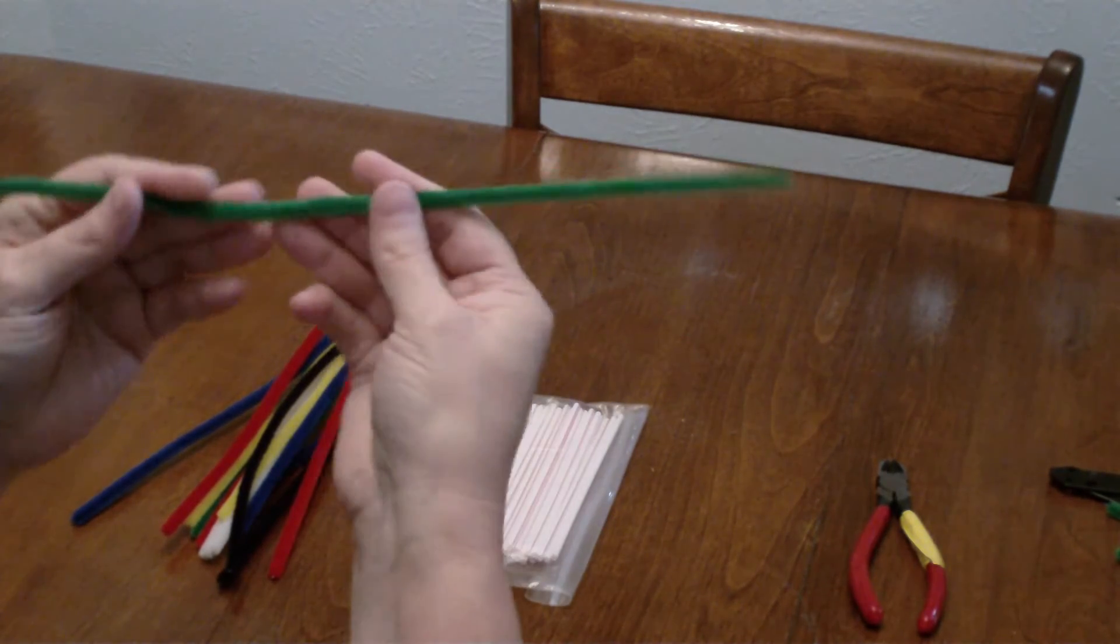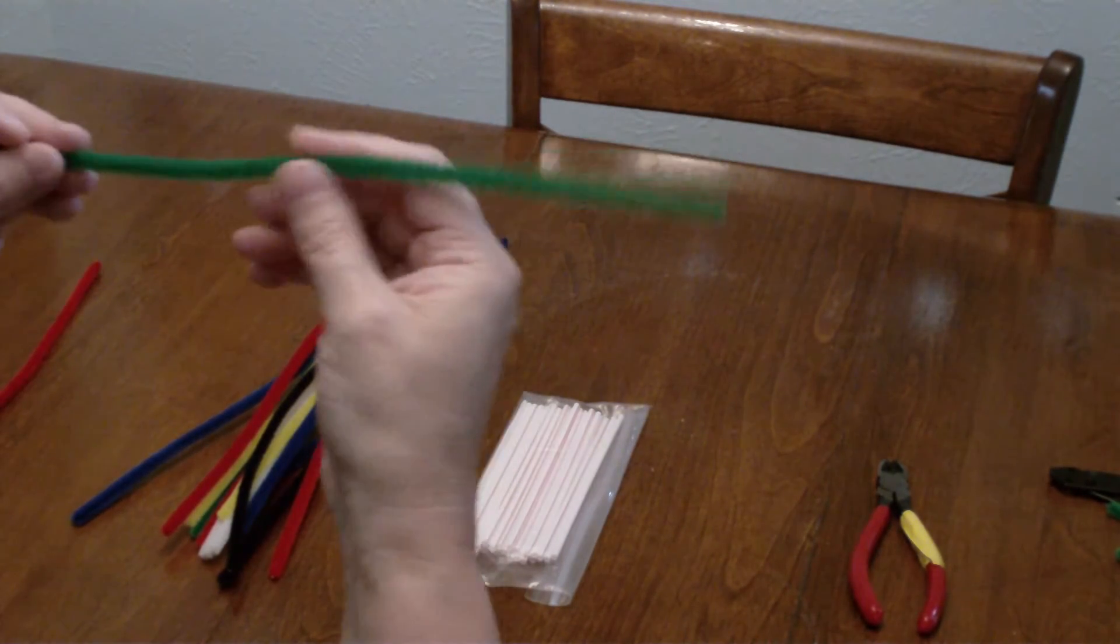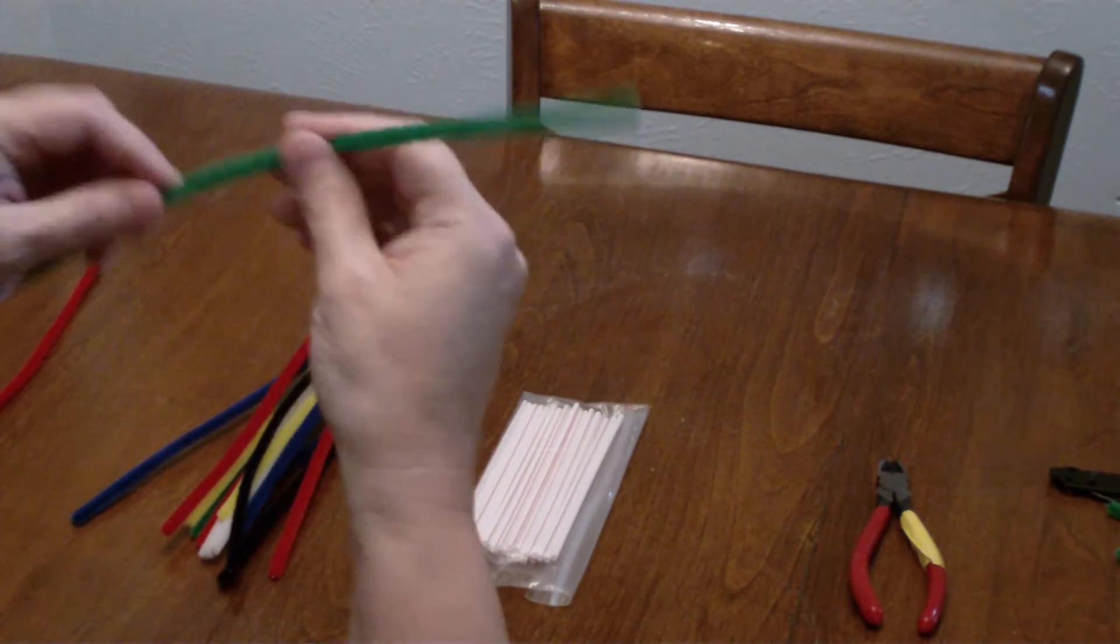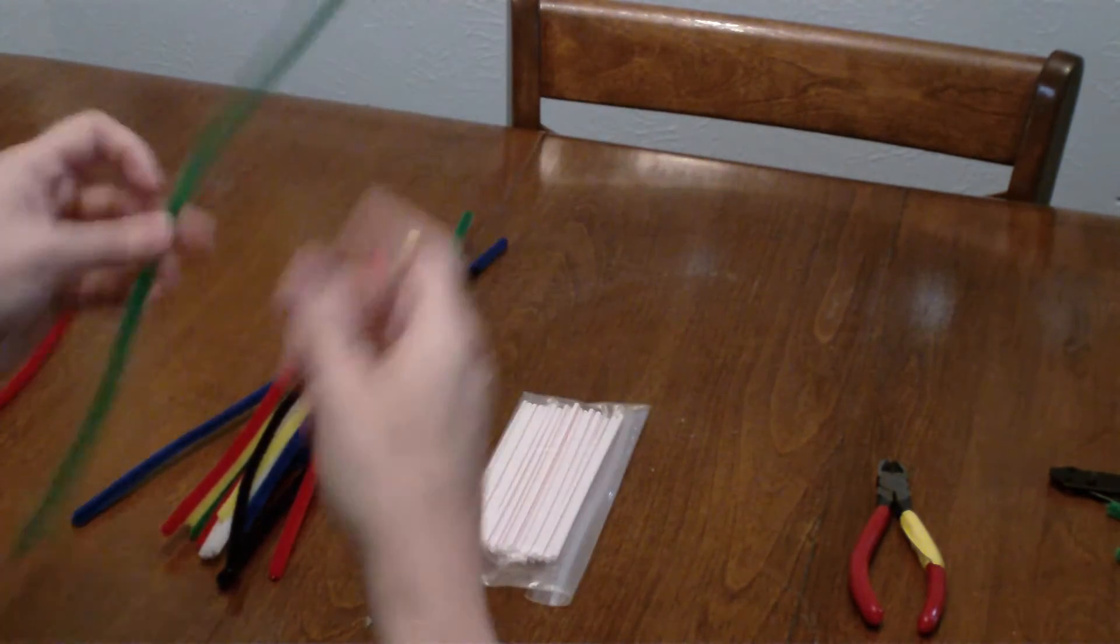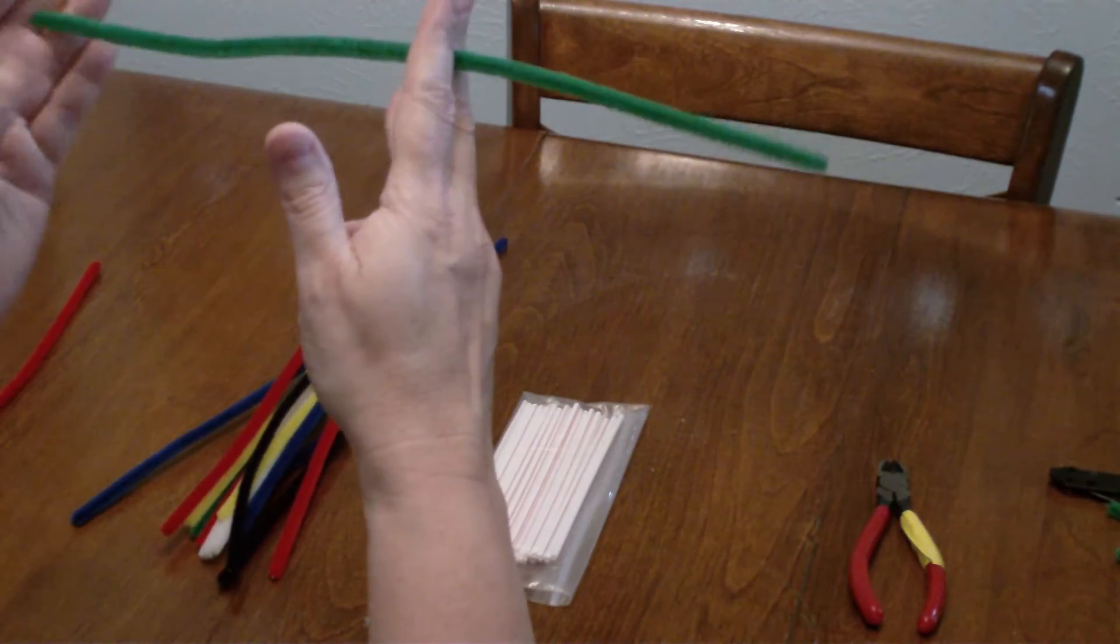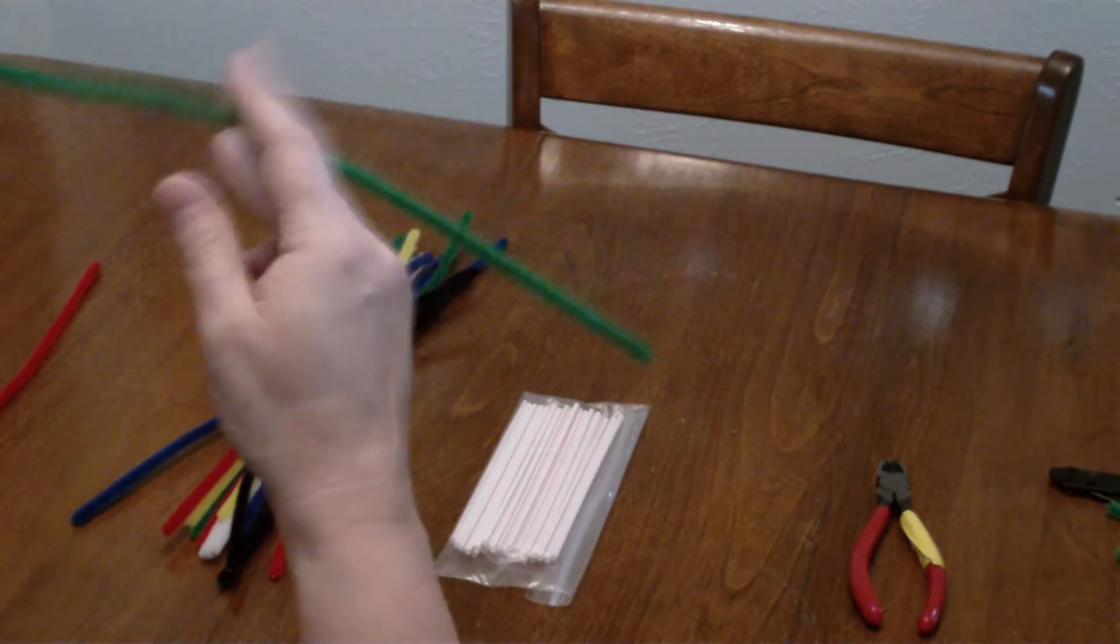If you're in a craft store, these are the 6 millimeter chenille stems. If you are buying the half-size packets, you want 30 of them.